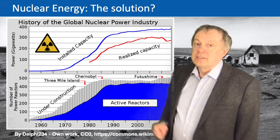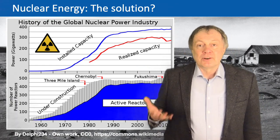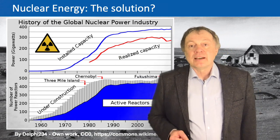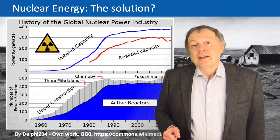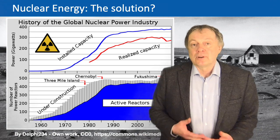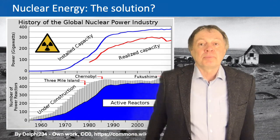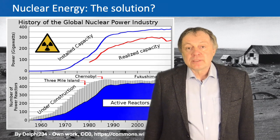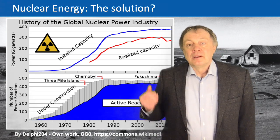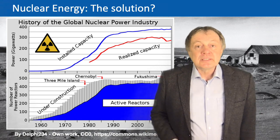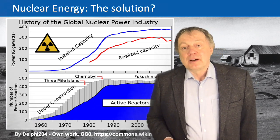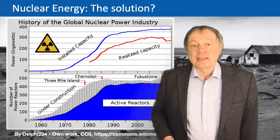On this plot you see the red line, which is the amount of nuclear power. This is what is called the realized capacity, and the blue curve is the installed capacity, which tells you how much nuclear power there could be if all nuclear power plants were operating. There has been a large increase of nuclear power starting in about the 1970s, with quite a steep rise.